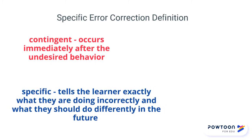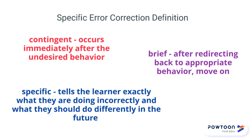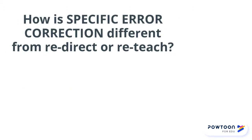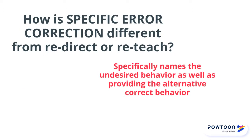It should be specific: tell the learner exactly what they did wrong and what they need to do differently. It should be brief: after redirecting back to appropriate behavior, move on. Specific error correction differs from redirection or reteaching in that you're specifically naming the undesired behavior as well as providing the alternative correct behavior. When you redirect, you're simply restating the desired behavior as described on the teaching matrix.